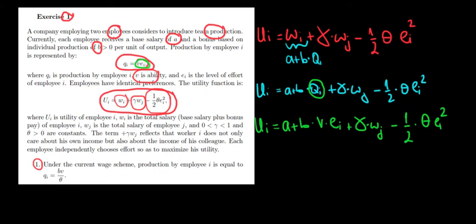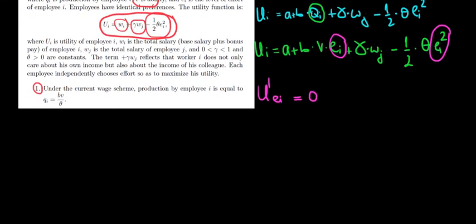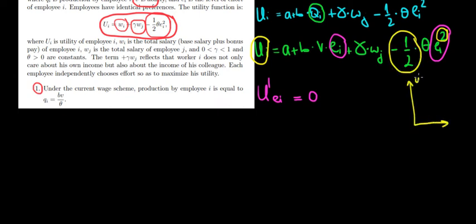Now utility depends on effort through two terms. To find the optimal effort we differentiate utility with respect to effort and set it equal to zero. Intuitively, the utility function is quadratic in effort with a negative coefficient — if we plotted utility against effort it would look like a parabola. The maximum is at the peak, where the derivative equals zero, which is why we set the derivative to zero.